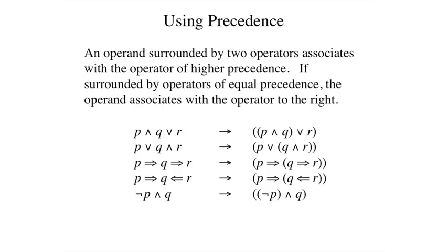In particular, we agree that an operand in such a situation always associates with the operator of higher precedence. When an operand is surrounded by operators of equal precedence, the operand associates to the right by convention.